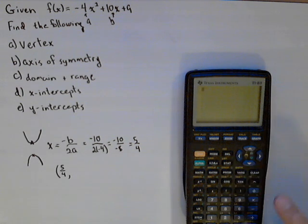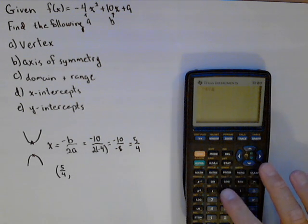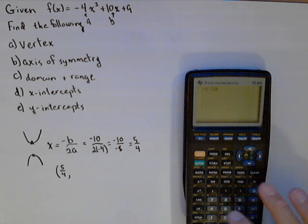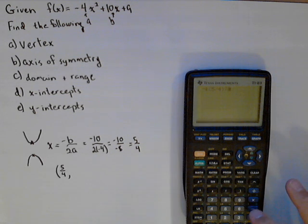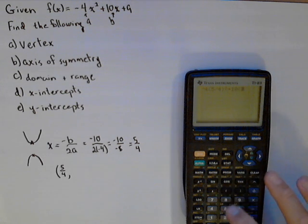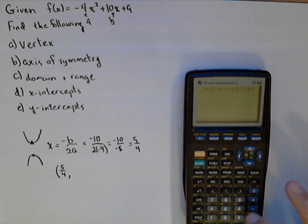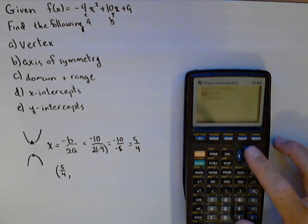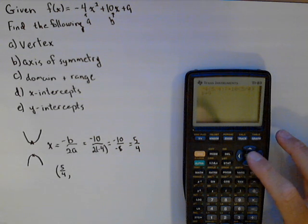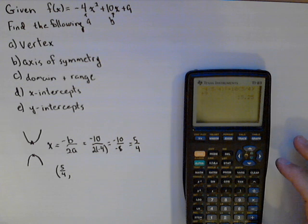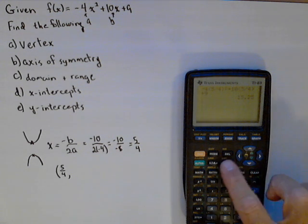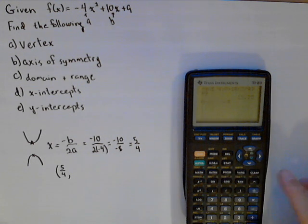So, negative 4 times 5 fourths squared plus 10 times 5 fourths plus 9. And I put something in wrong. I have one extra set of parentheses there. 15.25, or to put it in a fraction, you can use math fraction.